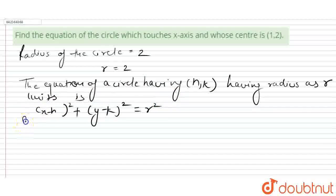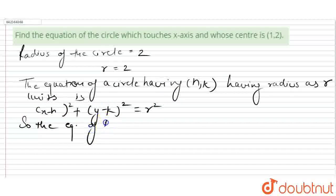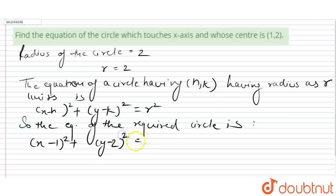So the equation of the required circle is (x minus 1) whole square plus (y minus 2) whole square is equal to 2 whole square, where we have h is 1 and k is 2.